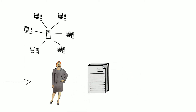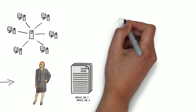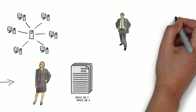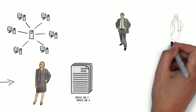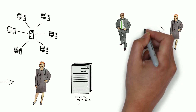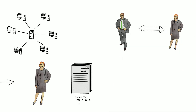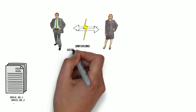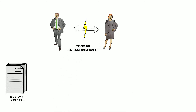Robust access management is key to ensuring that both employees and business partners have the authorizations they need to work efficiently. But it is also crucial to avoid creating extensive access rights to safeguard system security from fraud or criminal attacks. Things get even more complex when we look at the combination of access rights.